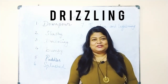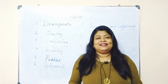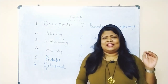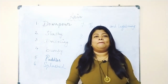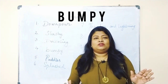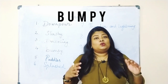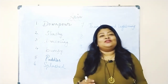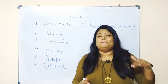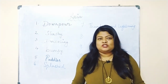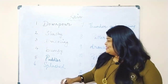The third word is 'drizzling.' Many people already know this — when there is a light rain, we say it's drizzling, or 'there was a slight drizzling.' The next word is 'bumpy.' After rain, the roads get damaged with potholes. So we say 'the roads are very bumpy here' or 'in this particular street the roads are very bumpy.'